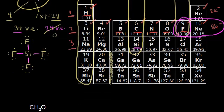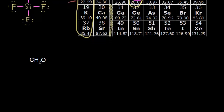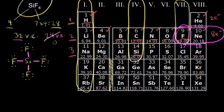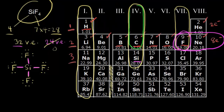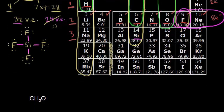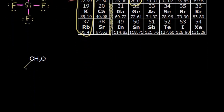Now let's look at CH2O — the molecular formula for formaldehyde. Following our guidelines, we first find the valence electrons. Carbon is in group four: four valence electrons. Hydrogen is in group one: one valence electron. Oxygen is in group six: six valence electrons. We have one carbon (4), two hydrogens (1 × 2 = 2), and one oxygen (6). So 4 plus 2 plus 6 gives 12 total valence electrons to represent in our dot structure.